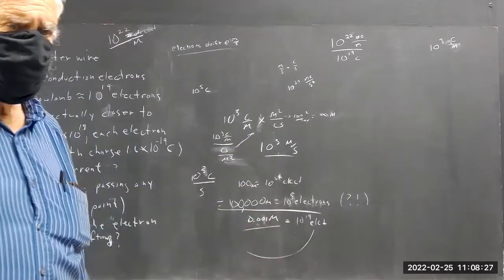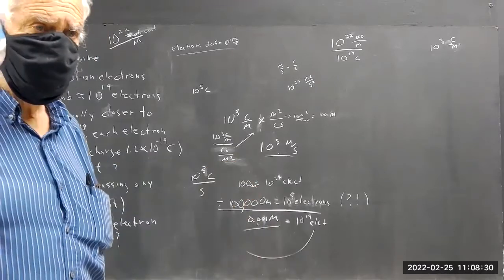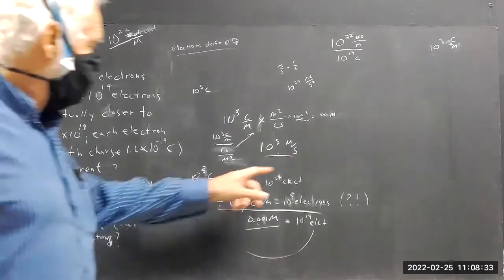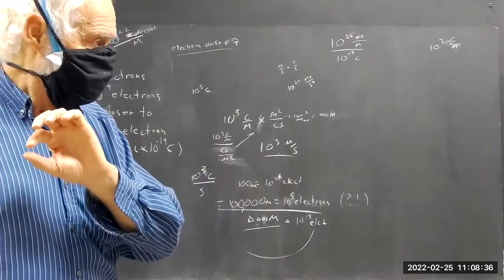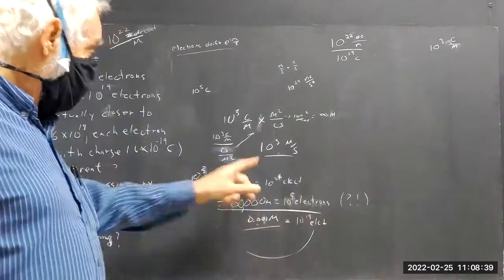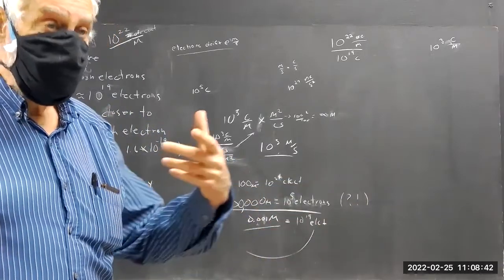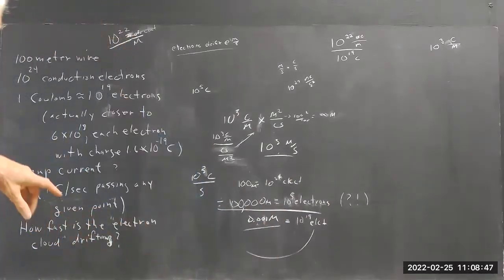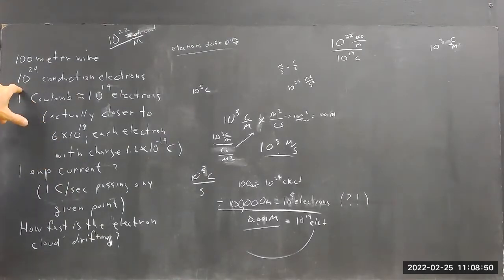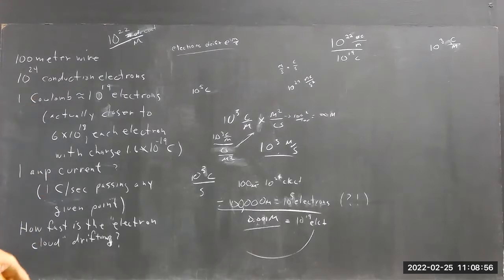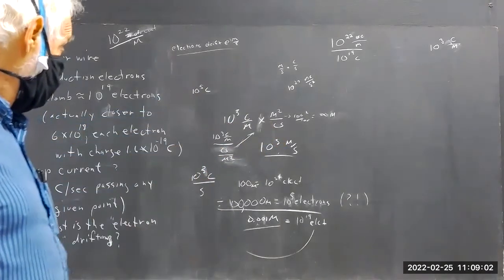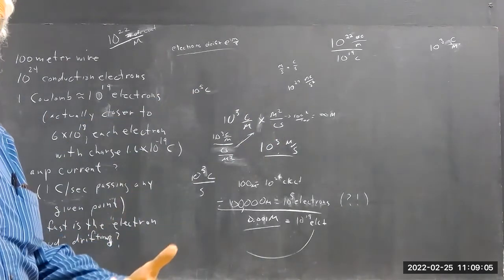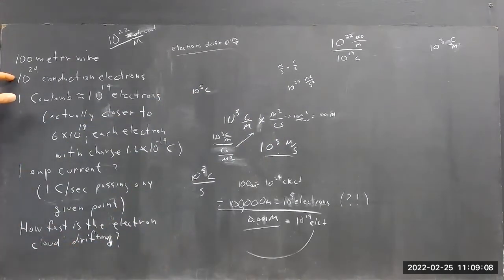Why doesn't 10 to the fifth meters per second make sense? Well, 10 to the fifth meters per second is a hundred thousand meters per second. This is a hundred-meter wire — it means all those electrons in the wire would pass by in a thousandth of a second. That would be a thousand times your 10 to the 24th electrons, or a thousand times the 10 to the fifth Coulombs that you have in there.